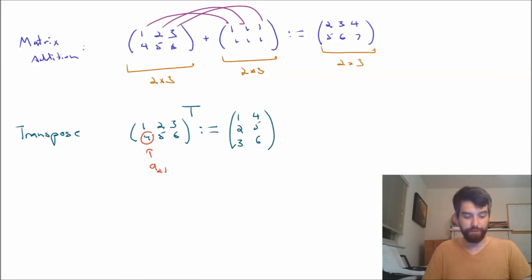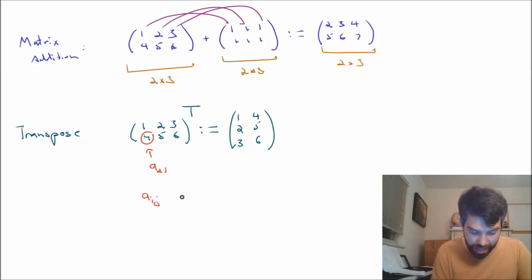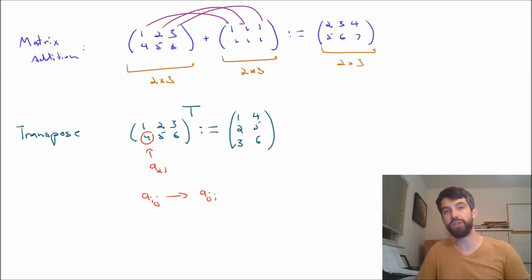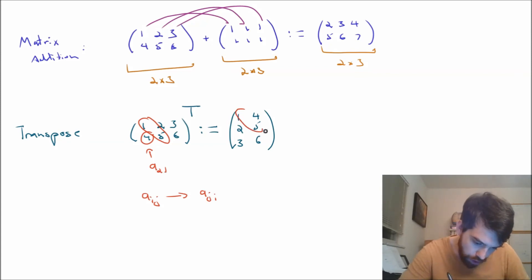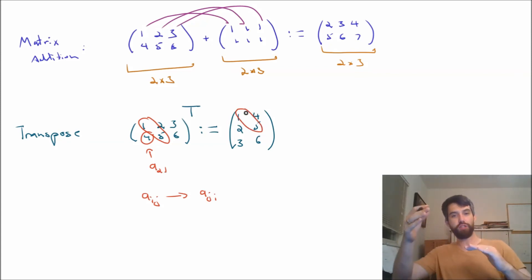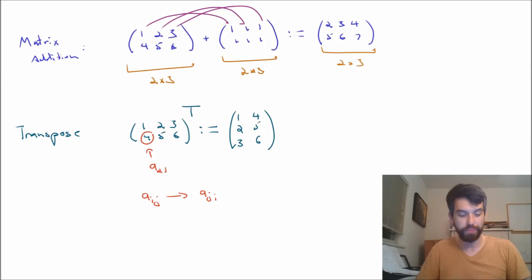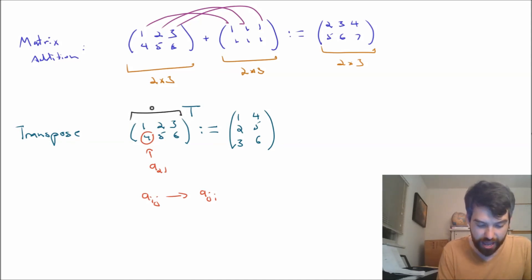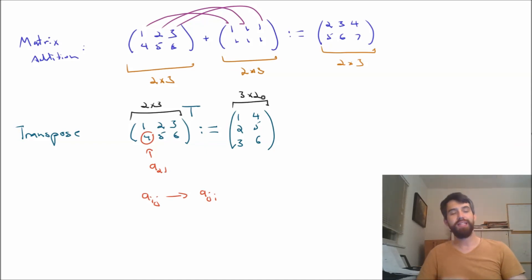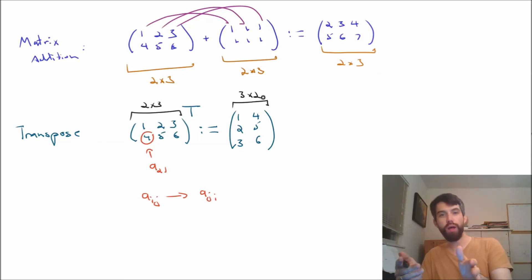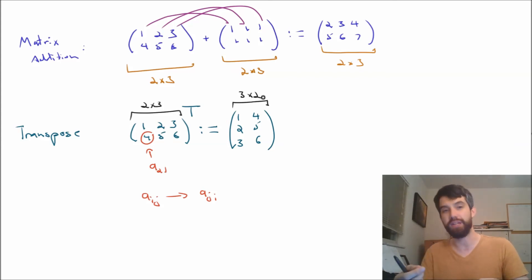Formally, every a-ij goes to a-ji. Along the main diagonal — entries a-1,1 and a-2,2 — the values don't change. Everything else reflects over that main diagonal. This also means that if the original matrix was 2×3, the output matrix has 3 rows and 2 columns. The whole idea of transposition is that the roles of rows and columns interchange: what was a row is now a column, and what was a column is now a row.